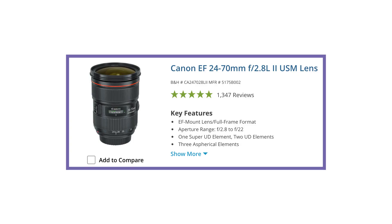I'm going to start off by explaining the basic information that you're going to always see in a lens title. You'll definitely see the brand, then you'll see a set of numbers or a single number followed by an MM, then you'll see something like an F with a slash, followed by a single number or another range of numbers.